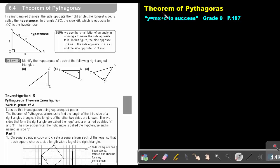Part 15. The theorem of Pythagoras. You will find this on page 187 in the Namibia Mathematics Grade 9 textbook Y equals MX plus C to success.